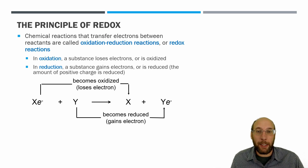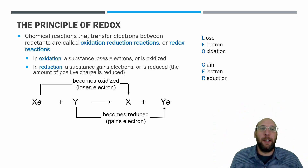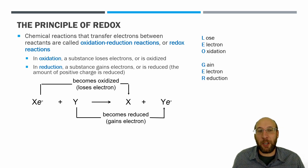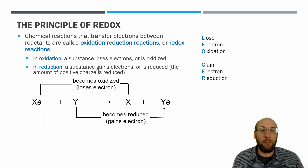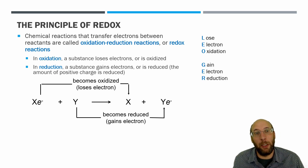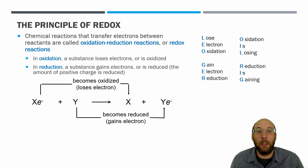The one I like is 'LEO the lion says GRR' — lose electron oxidation, gain electron reduction. There's another way that's a little more boring: OIL RIG — oxidation is losing, reduction is gaining.